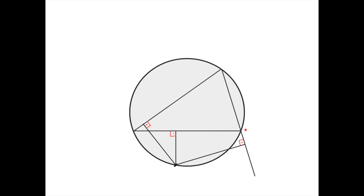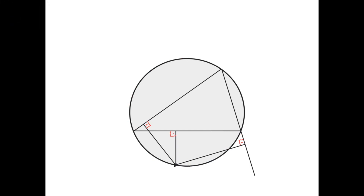Suppose you have a triangle and this is the circumcircle of the triangle. We're going to choose a random point on the circumcircle and drop perpendiculars from this point to each of the sides of the triangle. Note that this perpendicular actually falls outside of the side of the triangle, but on the same line. We're going to prove that these three points — the feet of the altitudes — lie on the same line. This line is called the Simpson line for this triangle and this point.